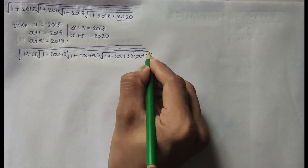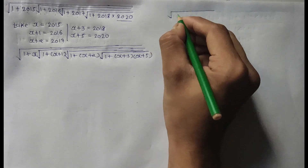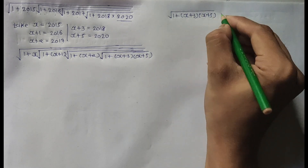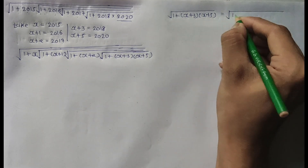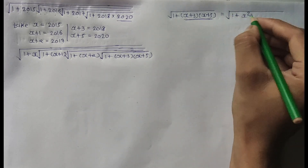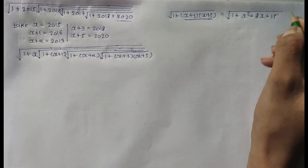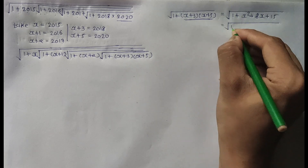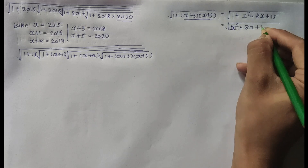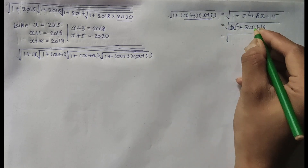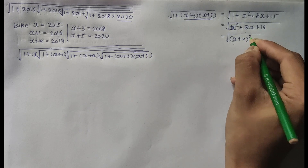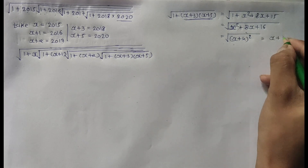Solve from the inside of the last square root: square root of 1 plus (x+3) times (x+5) equals square root of 1 plus x squared plus 8x plus 15, which equals square root of x squared plus 8x plus 16. This is a perfect square polynomial — (x+4) squared — so the square root cancels and we get x plus 4.